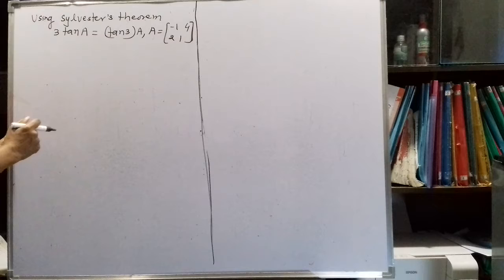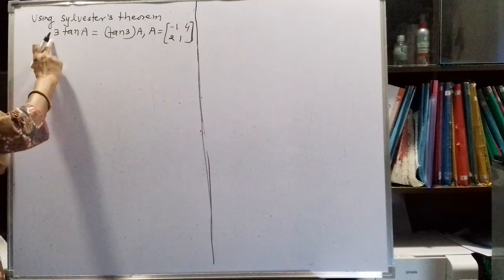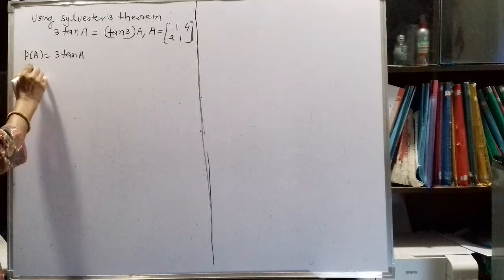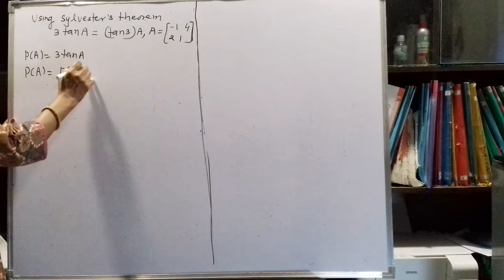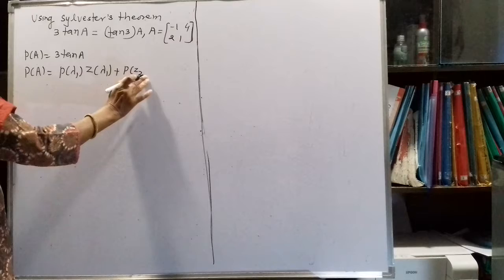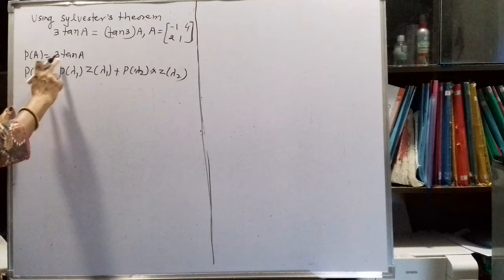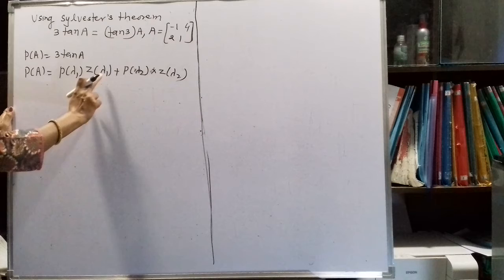Now, whatever we have to show, we consider P(A). So P(A) here is 3·tan(A), and by Sylvester's theorem, P(A) equals P(λ₁)·Z(λ₁) plus P(λ₂)·Z(λ₂). This is the formula from Sylvester's theorem. So we need to find these four values.